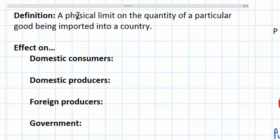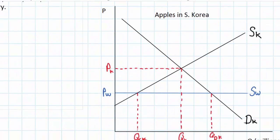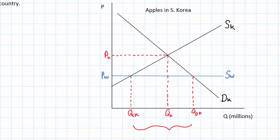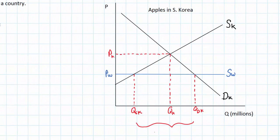Looking at our graph, we can see that before the imposition of any quota, South Korea will be importing a quantity of apples from QSK to QDK, as we showed in our earlier lessons.